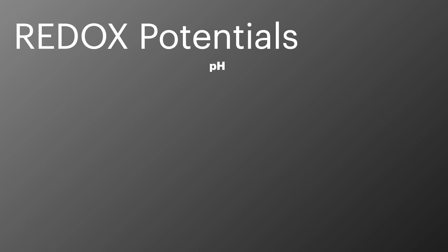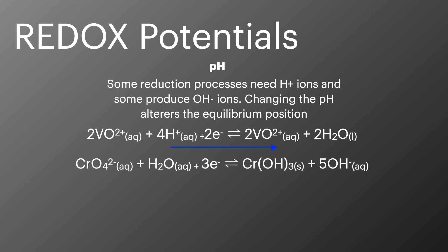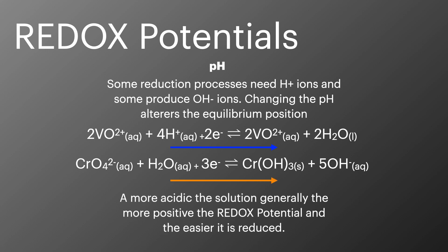If we alter the pH we also change the redox potential. Remember these redox equations are equilibria so they're governed by Le Chatelier's principle. Some reduction processes need a source of hydrogen ions to get them started whilst others produce hydroxide ions. Adding more hydrogen ions in both situations will influence the equilibrium. In this example with vanadium more H+ will push the equilibrium to the right and in this example with chromium adding more H+ will remove OH- which will also push the equilibrium to the right. This shows a general trend of more acidic solutions giving a more positive redox potential.